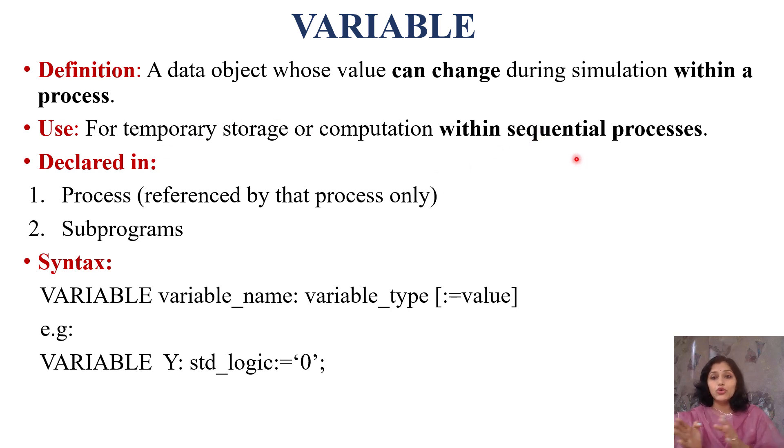Their scope is limited to processes only. We can declare variables in processes or we can declare them in sub-programs. Their scope is limited to those processes and those sub-programs. Syntax for variable declaration is: first word is, of course, variable, the name, any name you can assign, data type of that variable and then initial value.